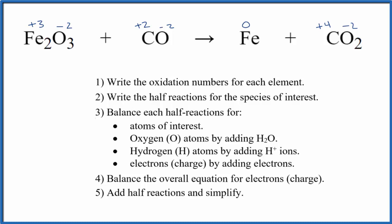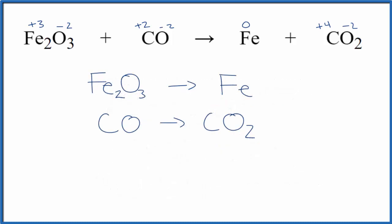Now we can write the half reactions for the species of interest, those are the ones that have changed their oxidation states. That looks like this. We're not concerned about the oxygens. Really, the iron went from plus 3 to 0, so this is our reduction half reaction. We gained an oxygen here. This is going to be oxidation. The carbon went from plus 2 to plus 4. That number increased. This is our oxidation.